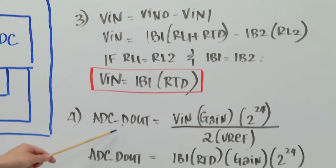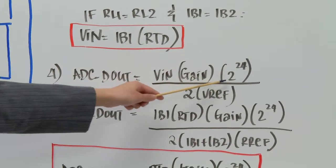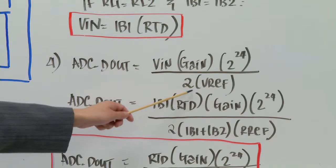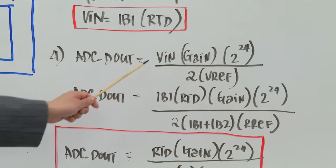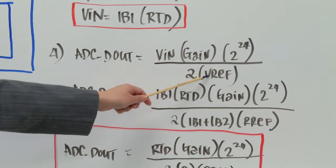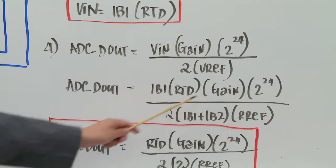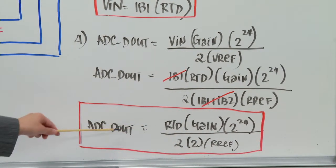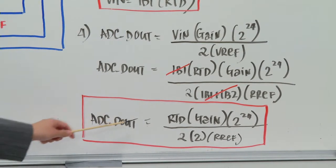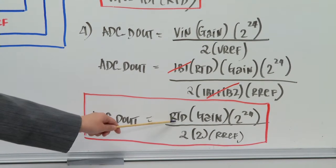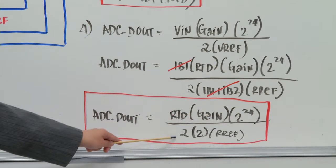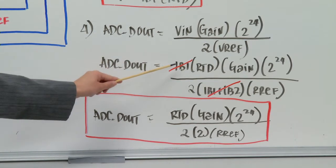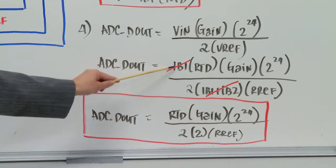So the output code of the ADC is VN times 2 to the 24, 24 because it's a 24 bit ADC, times 2 divided by 2 times VREF. And if you plug in your equations for VN as IB1 times RTD, and your VREF as IB1 plus IB2 times RREF, what you can see here is that you can cancel IB1 and IB2 because they're essentially the same. And your output ADC code, your final equation will eliminate IB1 and IB2. So what you have is RTD times the gain times 2 to the 24 divided by 2 times 2 times RREF. And you can see that with this ratio metric configuration you've eliminated any reference error contributed by the bias current IB1 and IB2. So that's how a ratio metric configuration works.